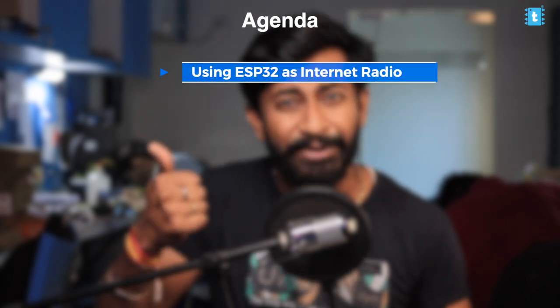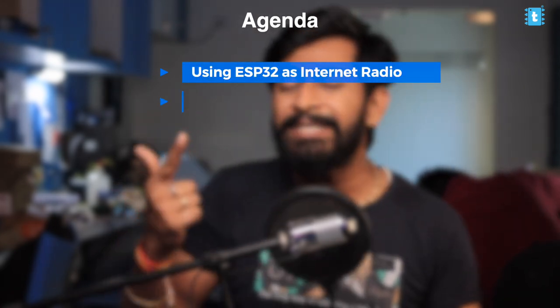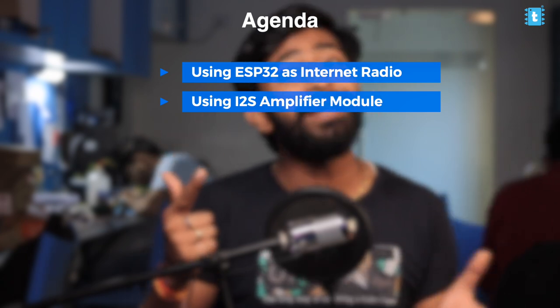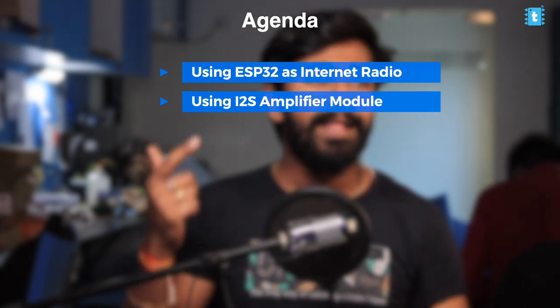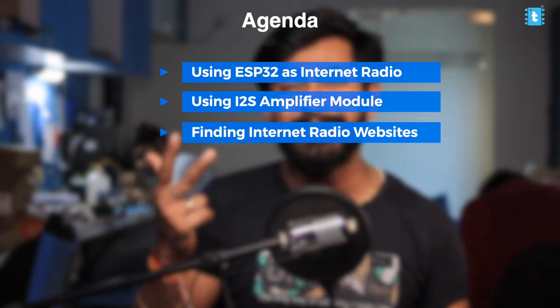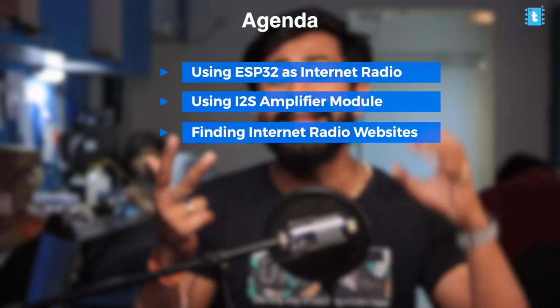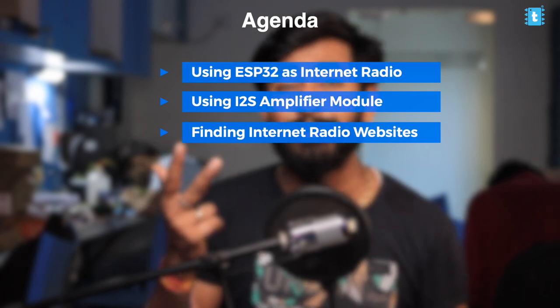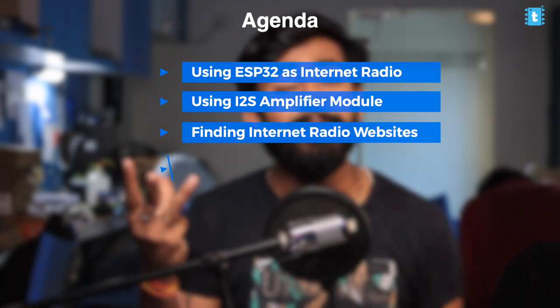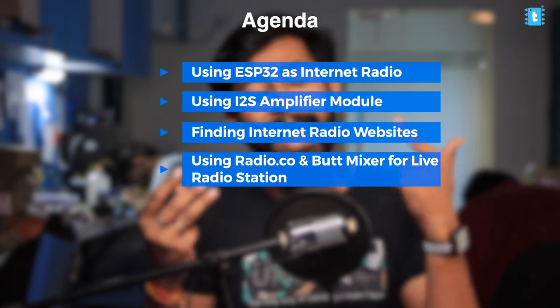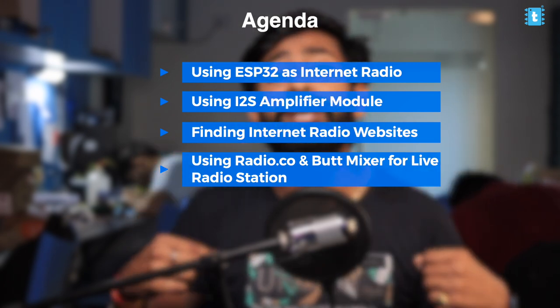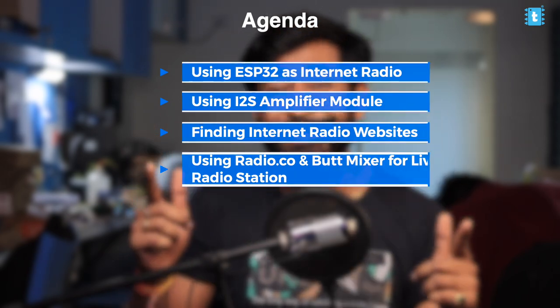Isn't that an interesting project to try out this summer? While watching this complete video, you'll be learning about how we can use the ESP32 board as an internet radio, how to use the I2S amplifier module to play audio directly from the ESP32 board, how to find internet radio websites to get MP3 file links for the Arduino code, and how to use the radio.co website and BUTT mixer tool to broadcast your own live audio over the internet.